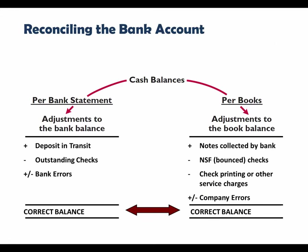This chart of a bank reconciliation shows that on the bank side we always add in deposits in transit and always subtract out outstanding checks. A bank error might be added in or subtracted out depending on what the error was. On the book side we always add in notes collected by the bank, always subtract out NSF checks and check printing or service charge fees. Then we add in or subtract any errors the company made in recording items — you have to read the scenario to determine which. Once you've addressed all those items you should arrive at one correct balance that matches on both sides.